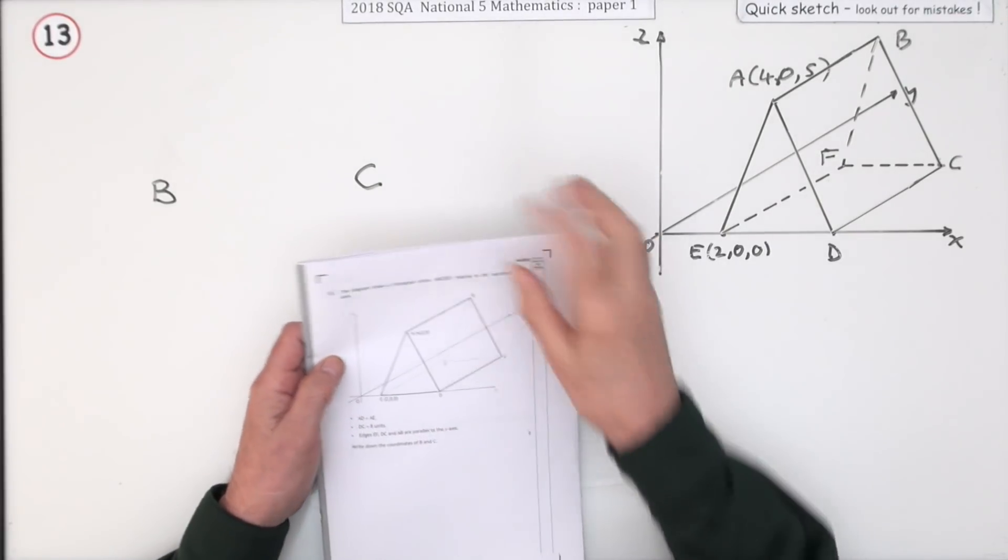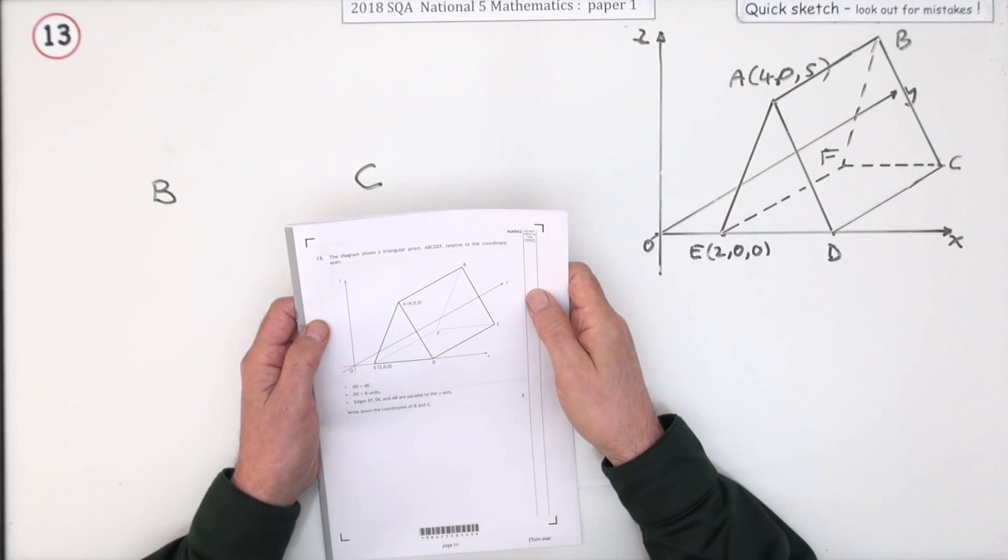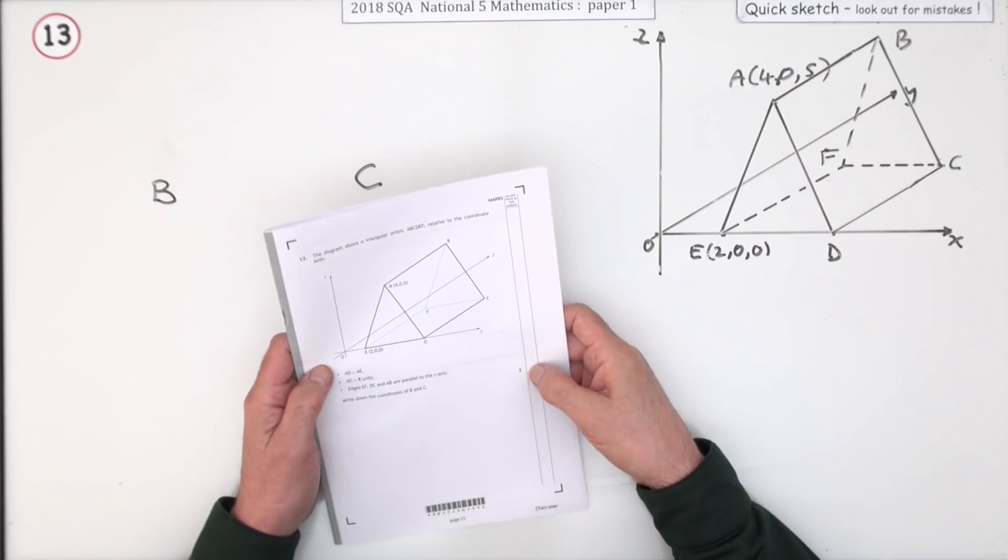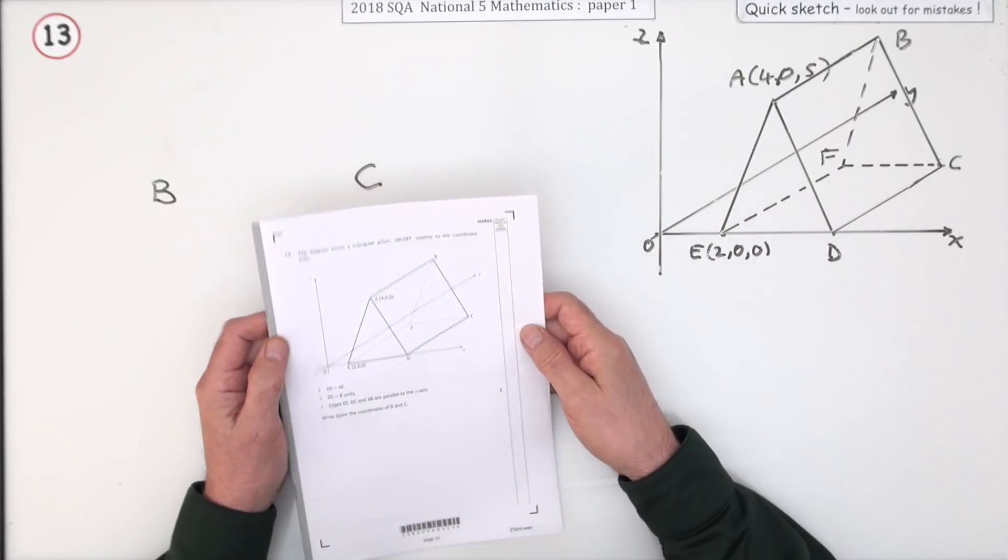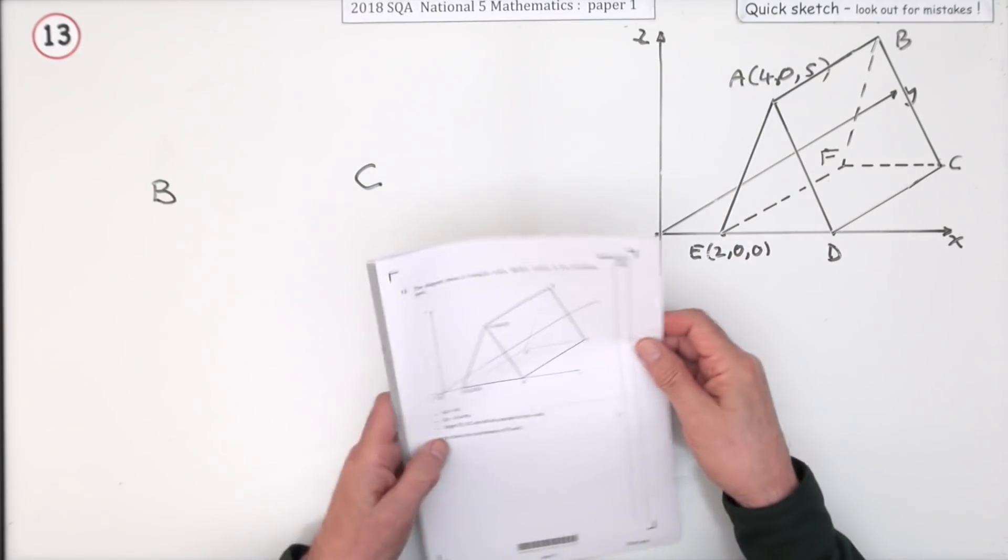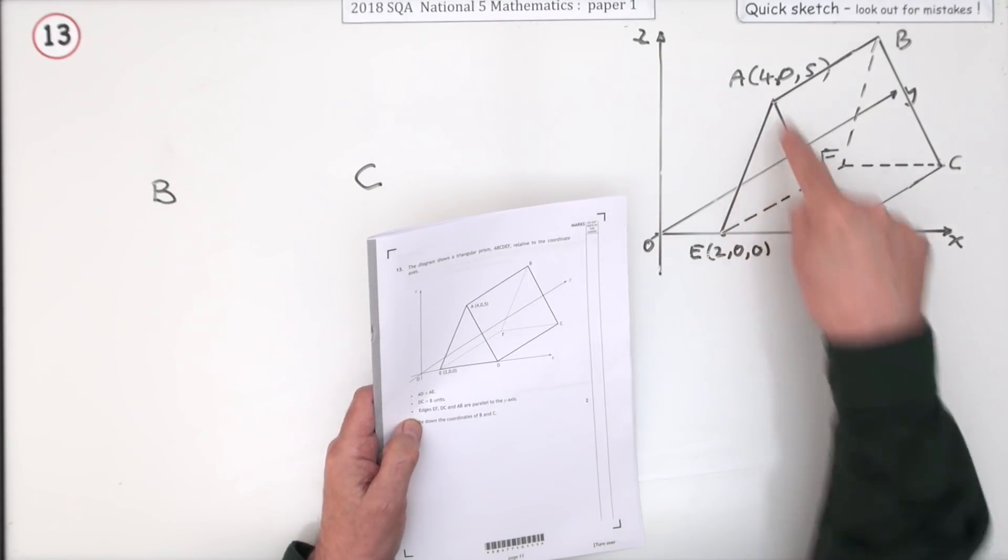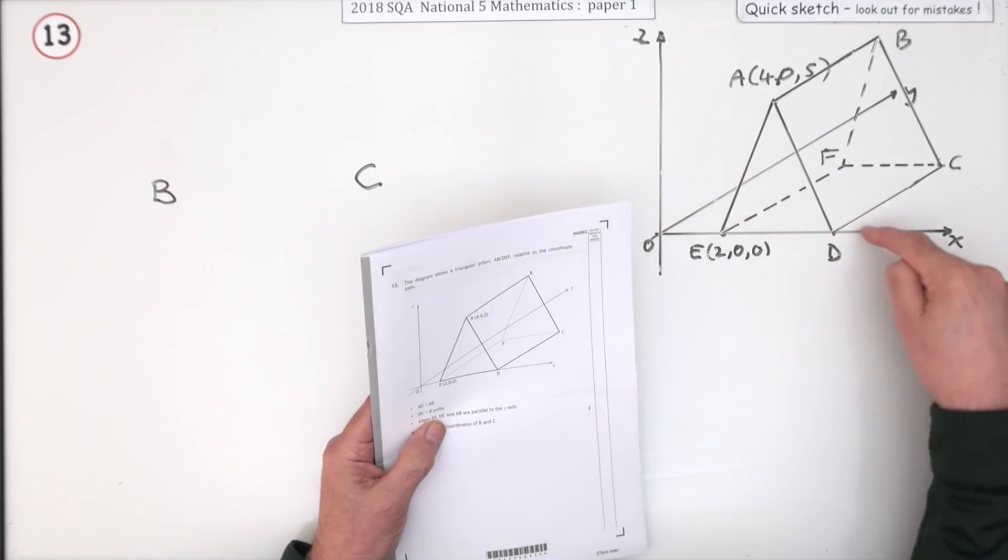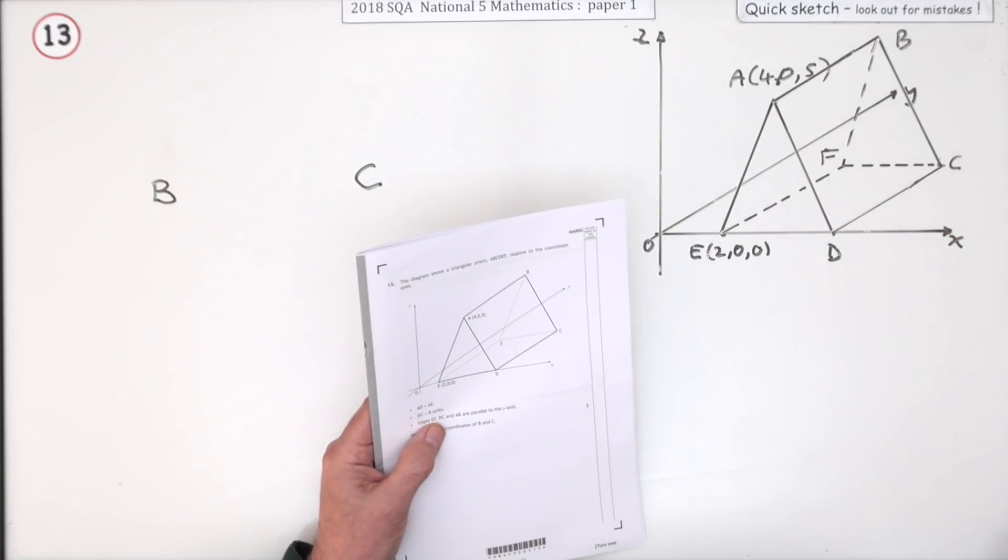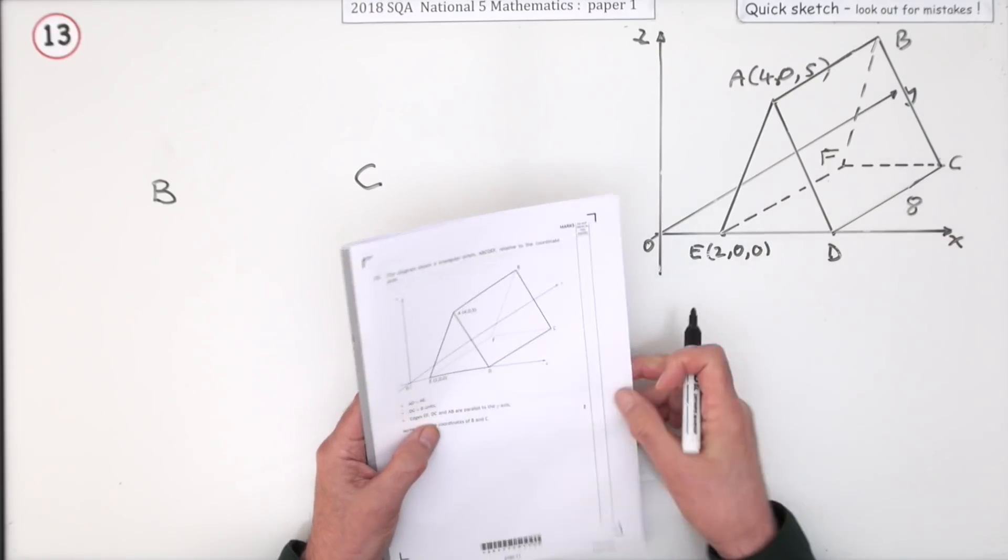Number 13 from paper 1 of the National 5 2018. Just two marks here for a little depth perception test. It tells you some facts about this triangular prism: AD is equal to AE so that's isosceles, DC is 8, and the edges EF, AB, and DC are all parallel to the y-axis.